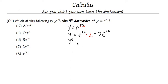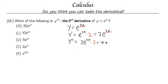For the second derivative, using double prime notation, we look at the first derivative which is 2e^(2x). The derivative of e^(2x) repeats itself, and once again we multiply by the derivative of the inside function 2x, which is 2. So we get 2 times 2 which is 4, giving us 4e^(2x) for the second derivative.